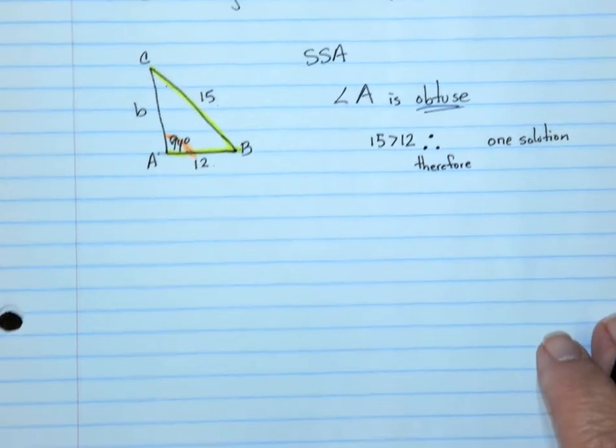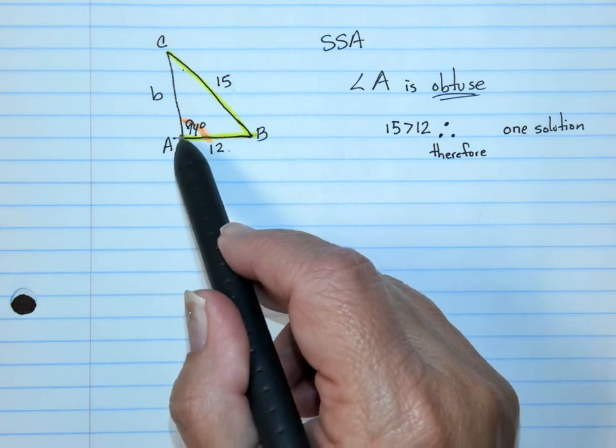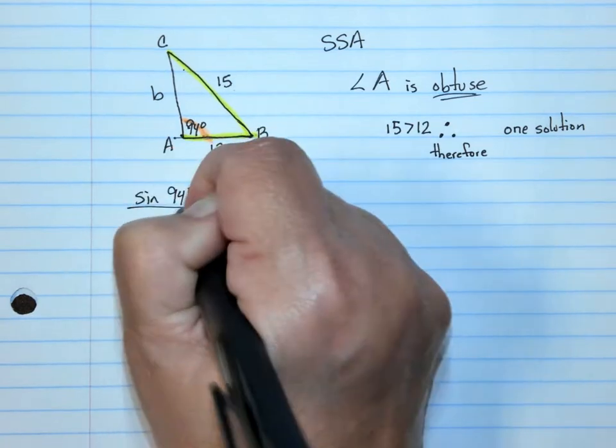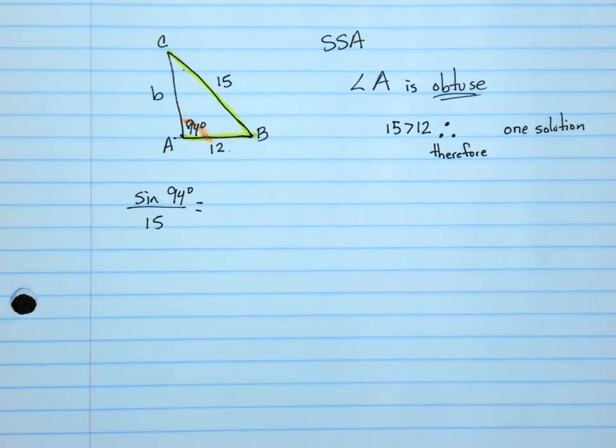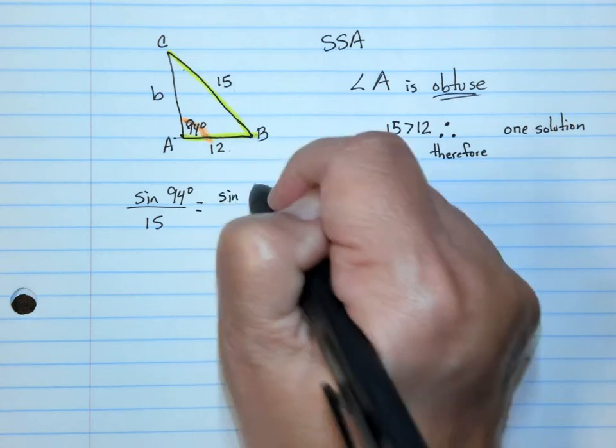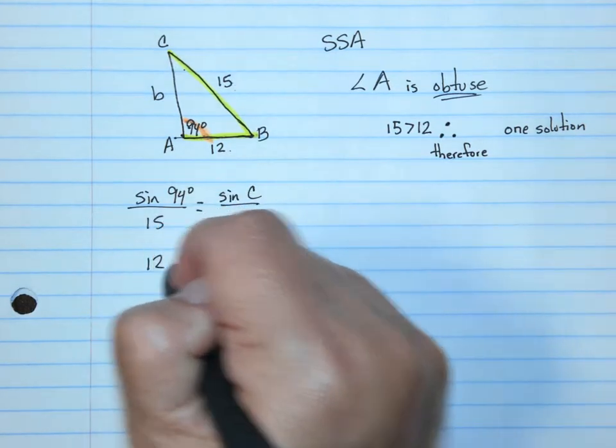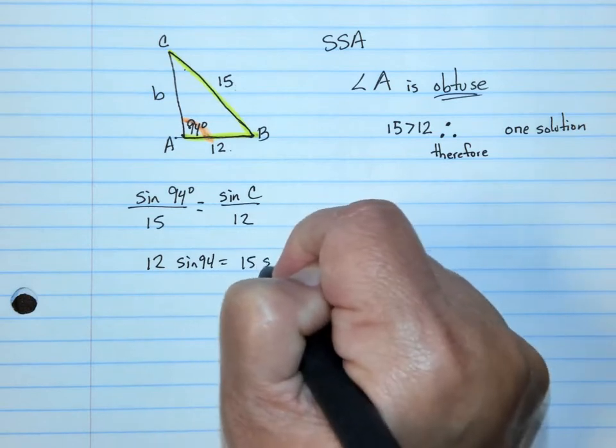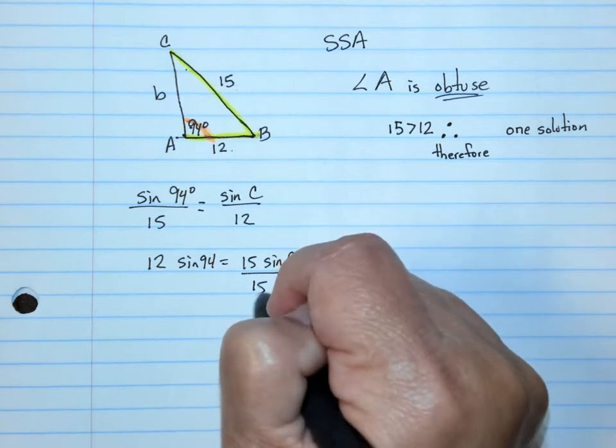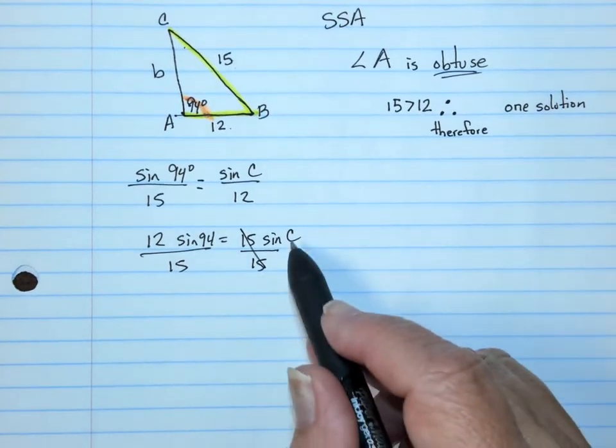If these measurements had been reversed, then there would not be a solution. So that's the first thing we're doing is we're comparing those two side lengths. So once we know there's a solution, we can go ahead and solve it. So we're going to start with what we know. We know A and we know side A. So we're going to say sine of 94 degrees over 15 is equal to, and what else do we know? We know this 12 is right here. So we say sine of C over 12. We can do our cross product. 12 sine 94 equals 15 sine C. Divide both sides by 15.